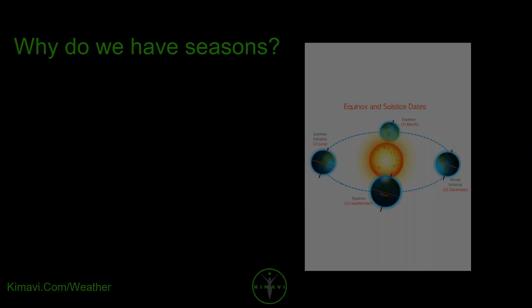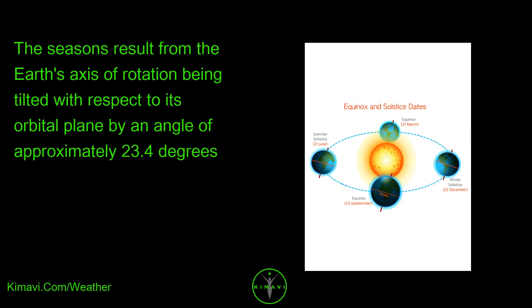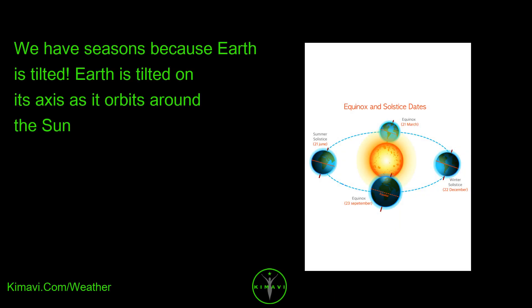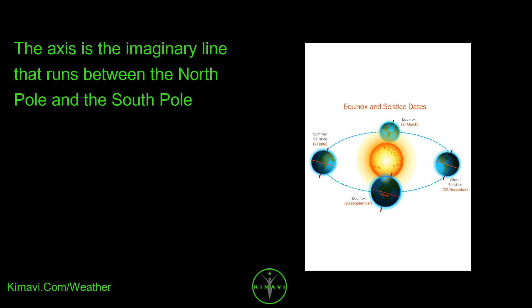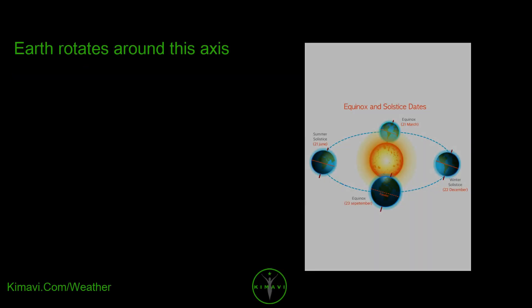Why do we have seasons? The seasons result from the Earth's axis of rotation being tilted with respect to its orbital plane by an angle of approximately 23.4 degrees. We have seasons because Earth is tilted on its axis as it orbits around the sun. The axis is the imaginary line that runs between the North Pole and the South Pole. Earth rotates around this axis.